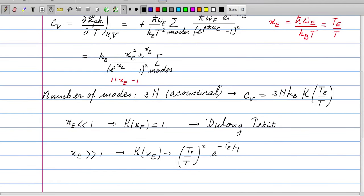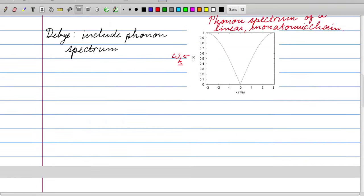Then we obtain this particular form which turns out to be not really in agreement with experiments. So let's make a step and include the phonon spectrum. This is precisely what Debye has done.